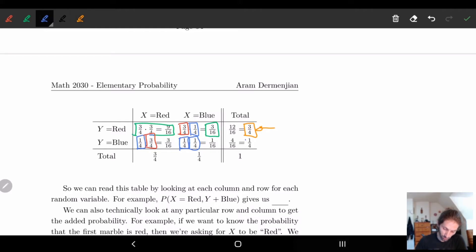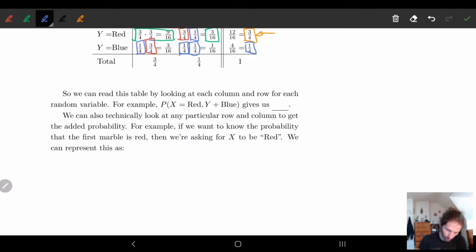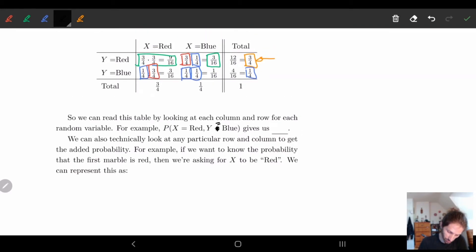Similarly, the probability that y is blue, so the second bag I pull a blue out, is one-fourth. So again, this makes sense. So what we can do is we can read this table as each column and different rows. So the probability that x is equal to red and y is equal to blue, I look at x equal to red, y is equal to blue, here we get three-sixteenths. And that's what we would put here, three-sixteenths.